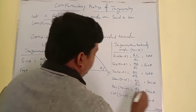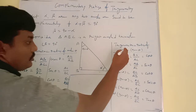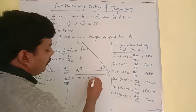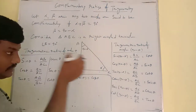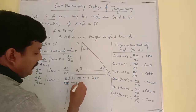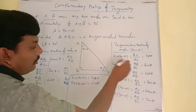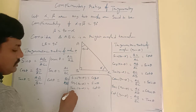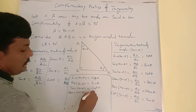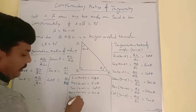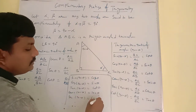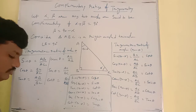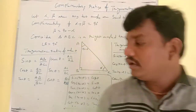Finally we conclude the six trigonometric complementary ratios: sin(90 minus theta) equals cos theta, cos(90 minus theta) equals sin theta, tan(90 minus theta) equals cot theta, cosecant(90 minus theta) equals secant theta, secant(90 minus theta) equals cosecant theta, and cot(90 minus theta) equals tan theta.